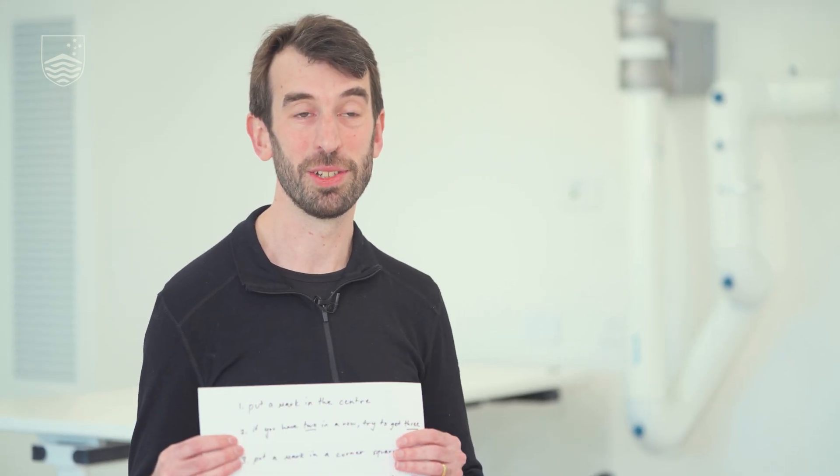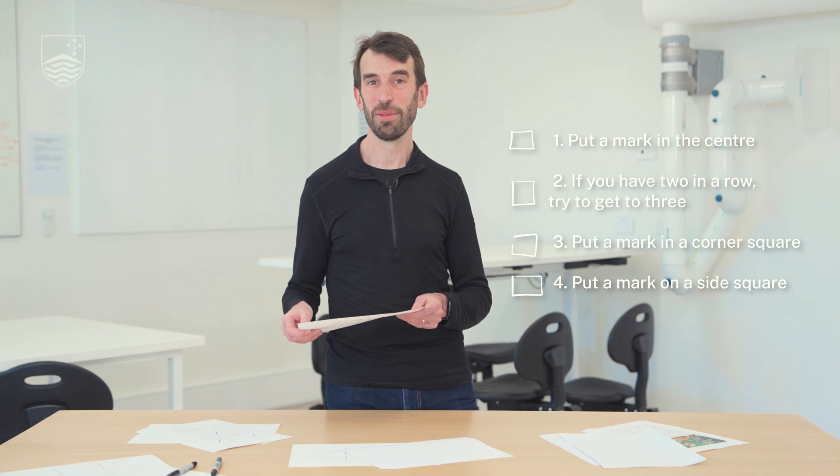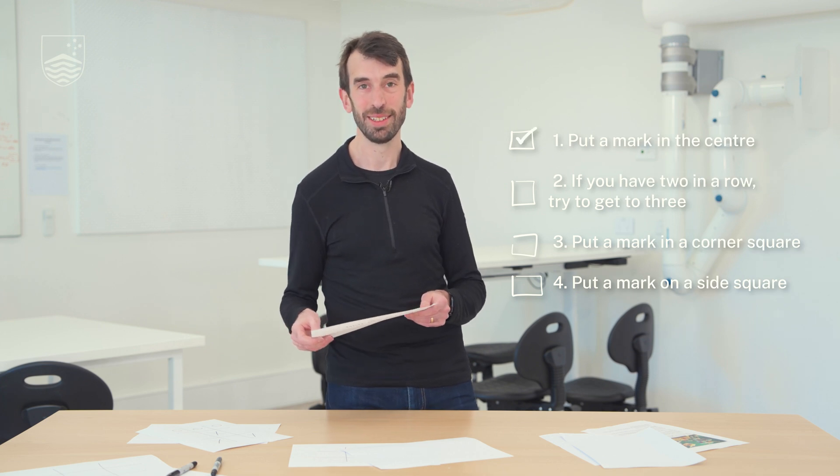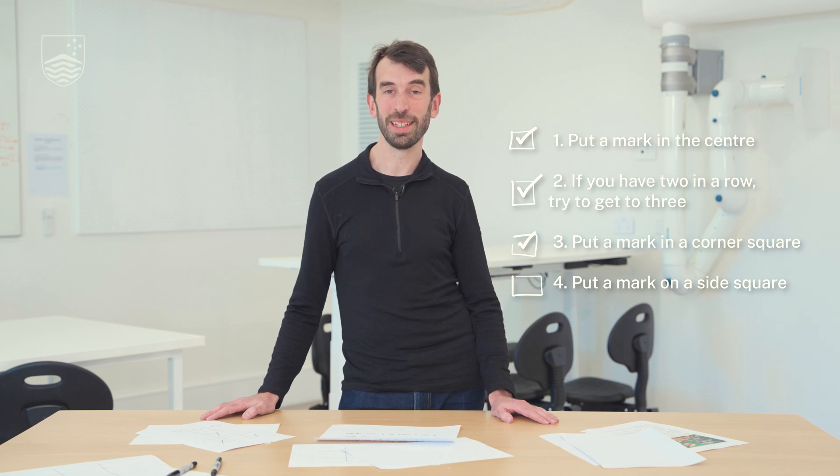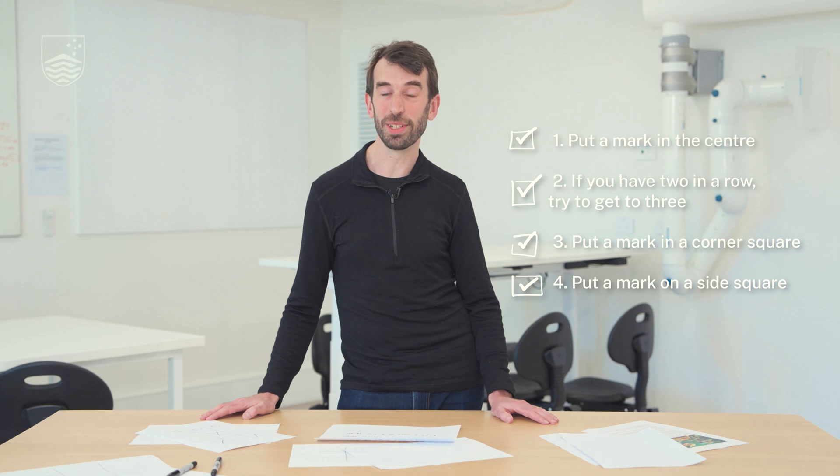Now that you've thought about your rules, it's time to try to write them down. One simple rule might be to start by putting your mark in the center. I've played a few games of noughts and crosses so I've got four simple rules: first, put your mark in the center if the center is available. Second, if you have two marks in a row, try to get the third one so that you win. Third, if a corner is empty, try to put your mark in the corner. And the last rule is that if the corners and the center are filled, try to put your mark in one of the side squares.